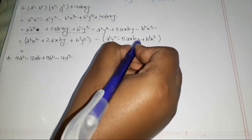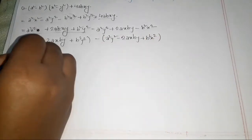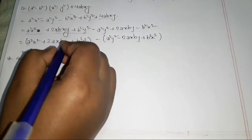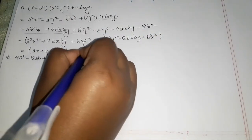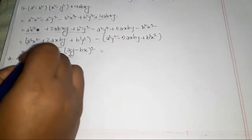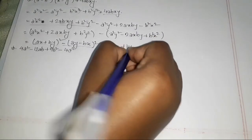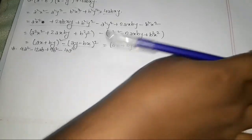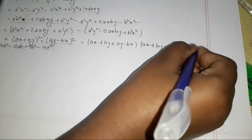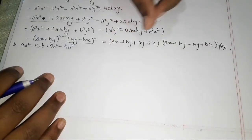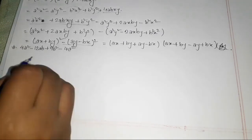We can write this as (ax + by)² and minus (ax - by)². Using a² - b² formula, this becomes (ax + by + ax - by)(ax + by - ax + by).